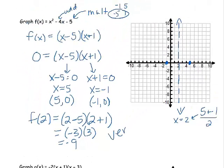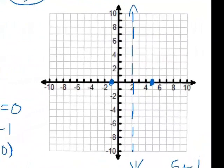That means that our vertex is at 2, negative 9. So I'm going to put a point at 2, negative 9, and we can start to see the parabola here.